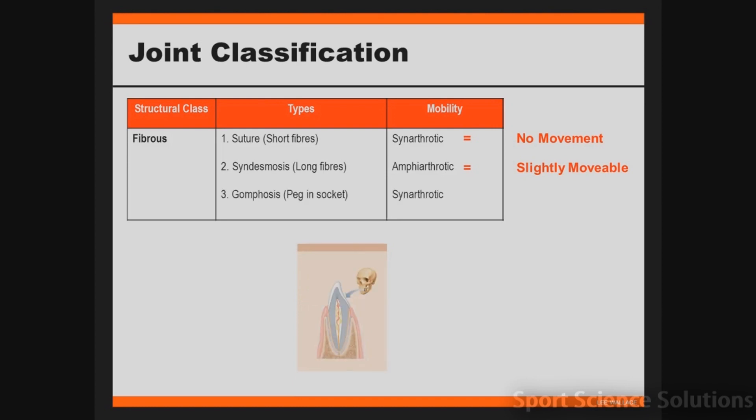The third type of fibrous joint is called a gomphosis joint, which means pegging socket. The only example in the human body is a tooth fitting into the gums. When we think about a tooth, there's no movement — they don't bend or flex at all. So they too are characterized as synarthrotic, meaning no movement.